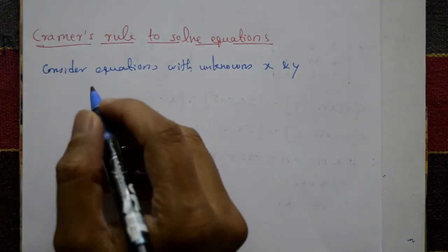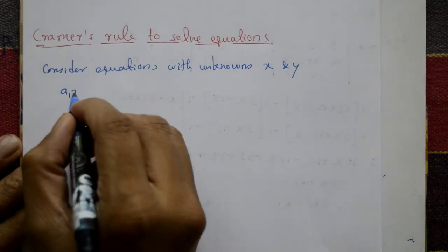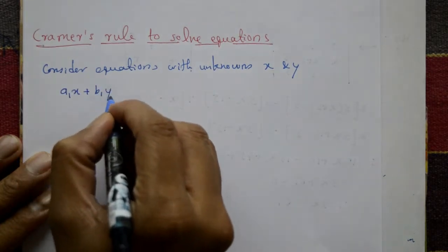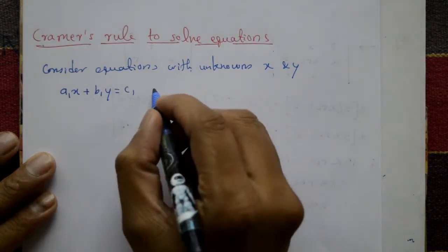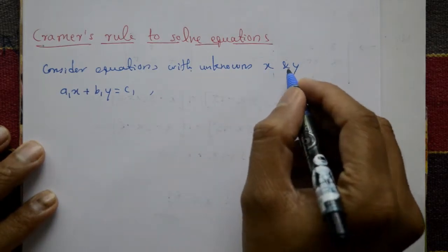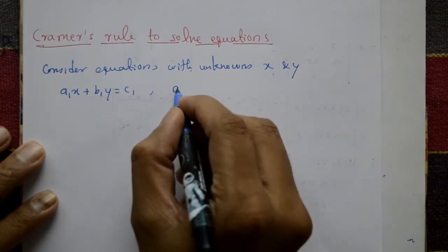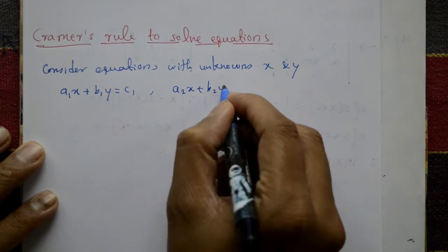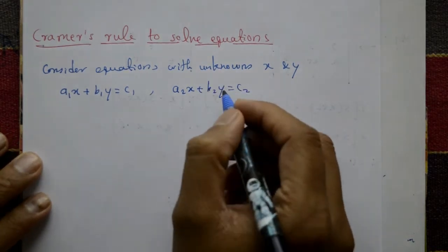The equation is generally given as: first equation is a1x plus b1y equals c1, and second equation is a2x plus b2y equals c2, with two unknowns x and y.